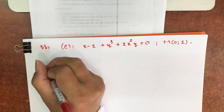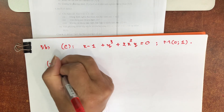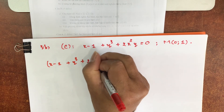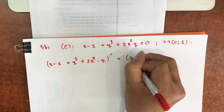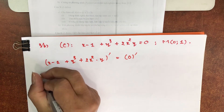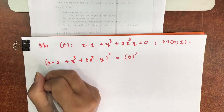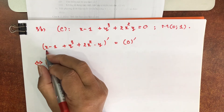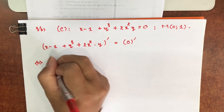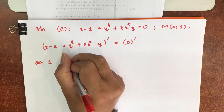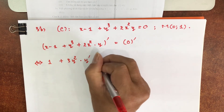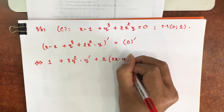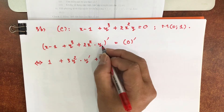Bây giờ các anh chị lấy đạo hàm 2 vế của đẳng thức xác định hàm ẩn. (x−1) + (y−3) + 2x²y lấy đạo hàm vế phải là không. Kết quả: x đạo hàm là 1, rồi 1 đạo hàm là 0. y³ đạo hàm bằng 3y² nhân với y', cộng với 2 nhân với x² đạo hàm là 2x nhân y, cộng với x² nhân với y'.